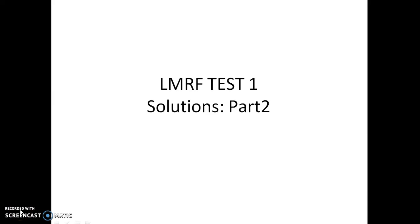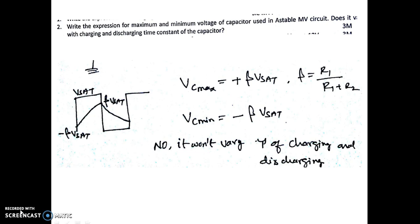Welcome to the video on solutions to LMRF Test One. This is the second part of the course. In the previous video, we discussed: write an expression for the maximum and minimum voltage of the capacitor used in an astable multivibrator circuit, and does it vary with the charging and discharging time constant of the capacitor.